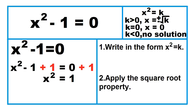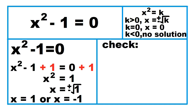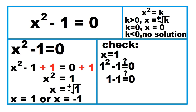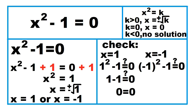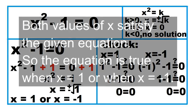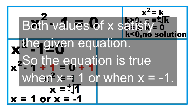The next step is to find the square root of 1. So x equals 1 or x equals negative 1. For x equals 1: is the square of 1 minus 1 equal to 0? Is 1 minus 1 equal to 0? Yes, 0 equals 0. For x equals negative 1: is the square of negative 1 minus 1 equal to 0? Is 1 minus 1 equal to 0? Yes, 0 equals 0. Both values satisfy the equation, so the equation is true when x equals 1 or x equals negative 1.